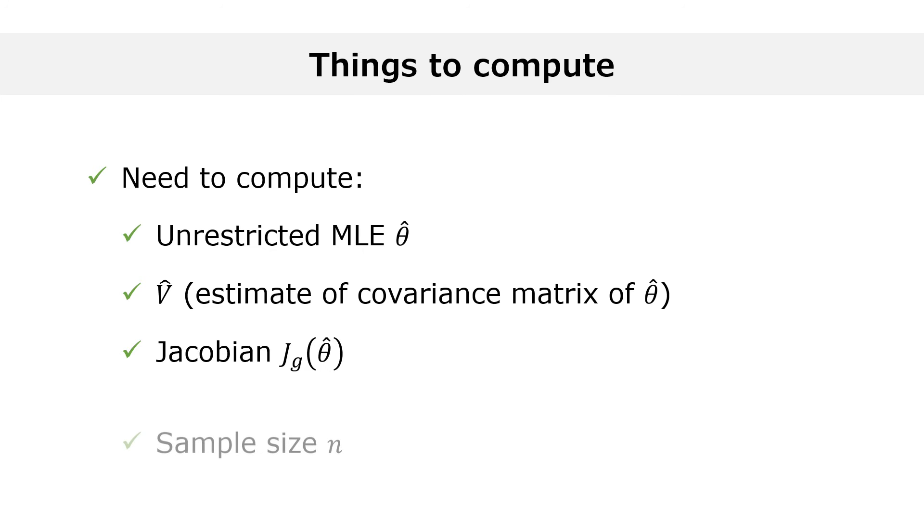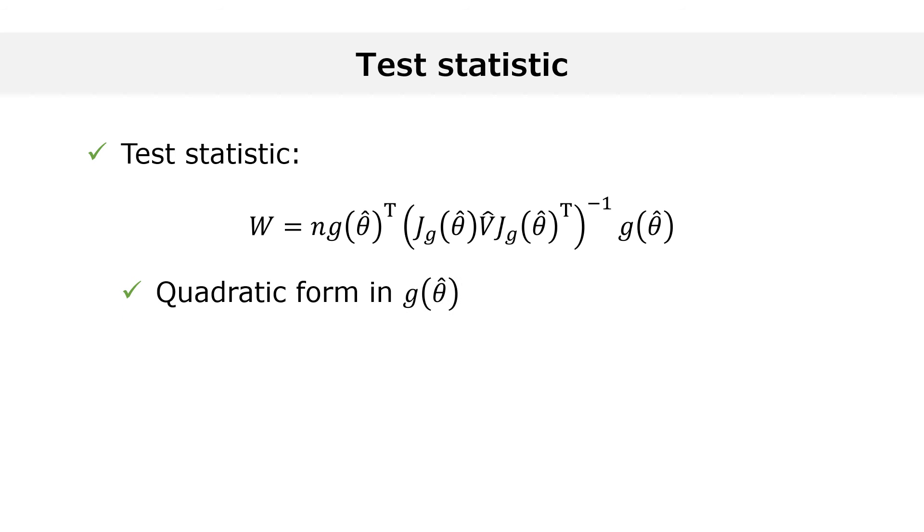Finally, we need to know the sample size n. Here's the Wald test statistic, which we denote by W. The test statistic is a quadratic form in g of theta hat that also depends on the sample size n, the Jacobian J and the covariance matrix v hat.